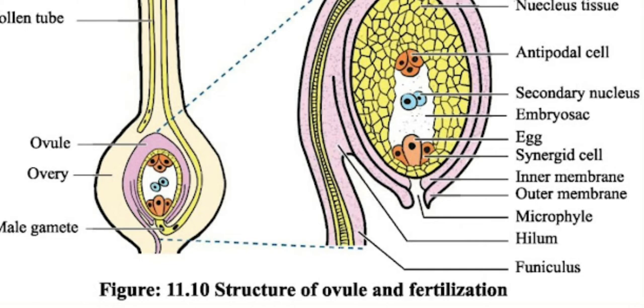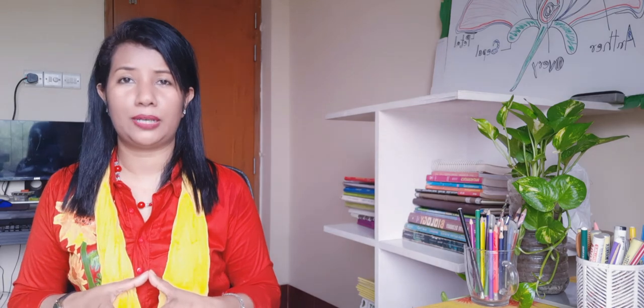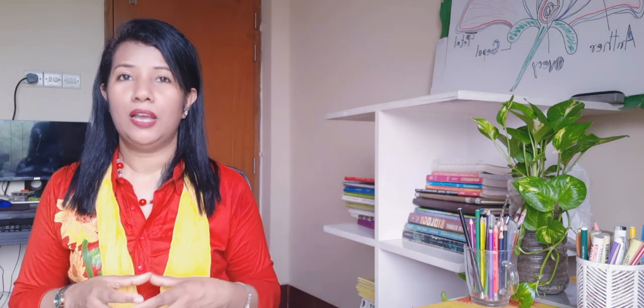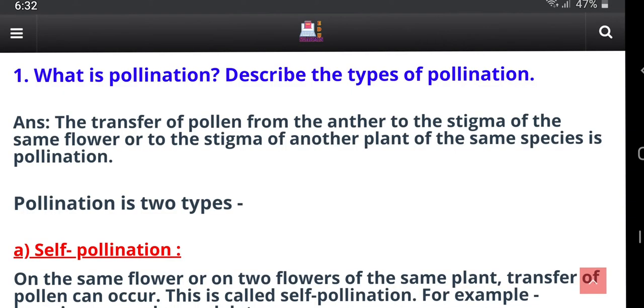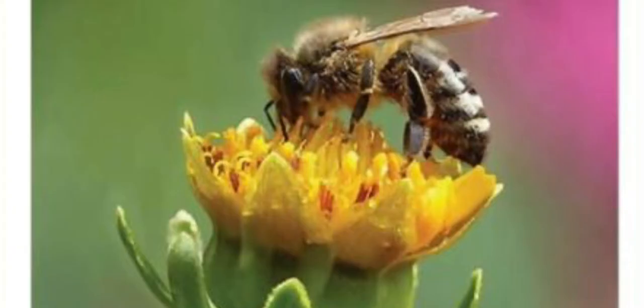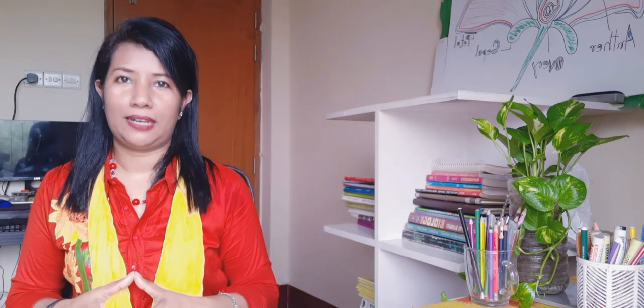Now, what is pollination? All the flower structures — their organization, color, ability to attract insects — relate to pollination. Pollination is the process of transfer of pollen grains from the anther to the stigma.